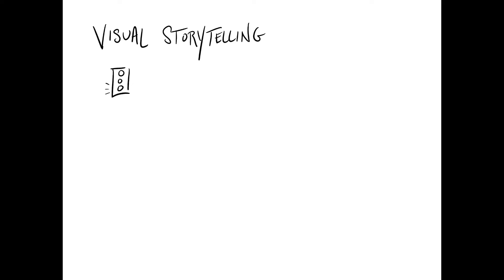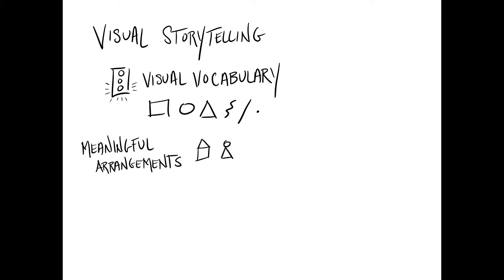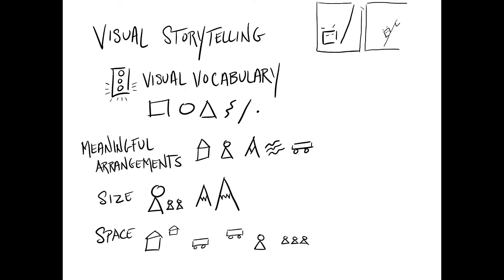In order to help students become effective visual storytellers, it's helpful for them to start by building a basic visual vocabulary. A basic vocabulary consists of a rectangle, a circle or oval, a triangle, a squiggle, a line, and a dot. With just those simple shapes, we can start putting them into meaningful arrangements and experimenting with size and space. With those pieces, that is all a student needs to start creating meaningful comics.